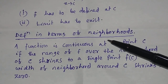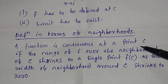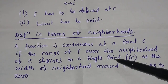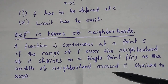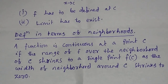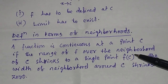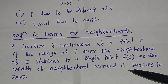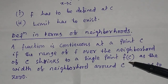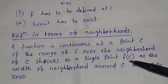Definition of a continuous function in terms of neighborhoods. A function is continuous at a point c if the range of the function over the neighborhood of c shrinks to a single point f(c) as the width of the neighborhood around c shrinks to 0. For the continuity of the function at c, the points must be very close together. If the points are very close together, then the function will be continuous at c, that is, they converge to a single point.